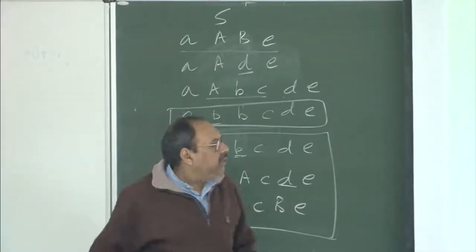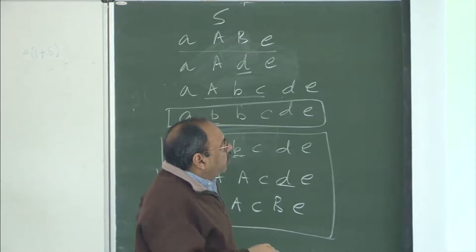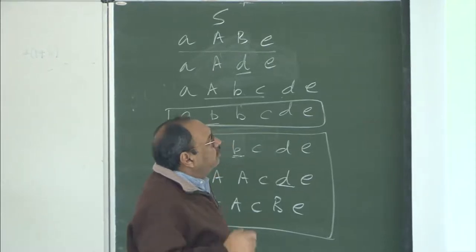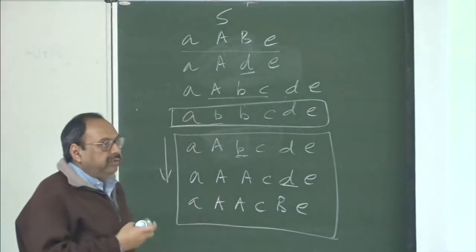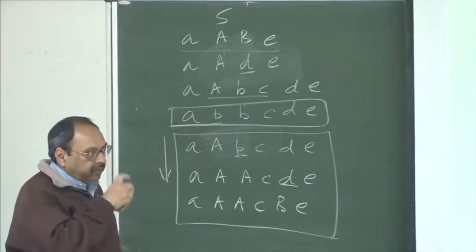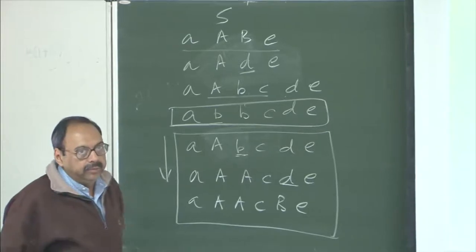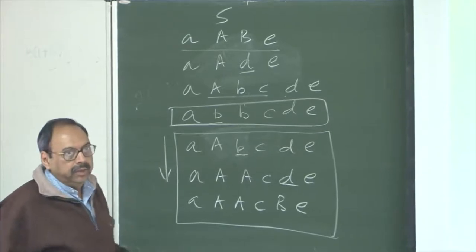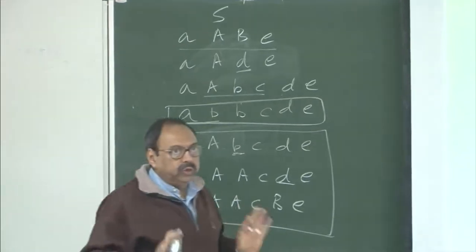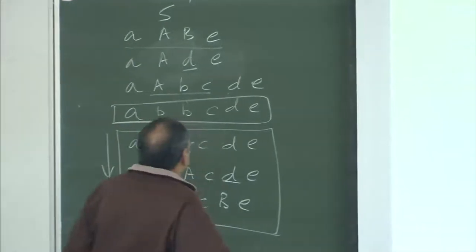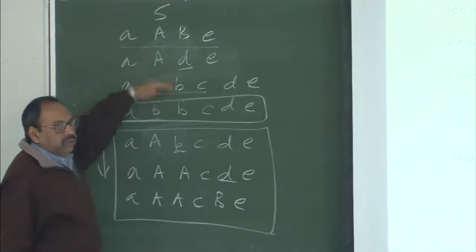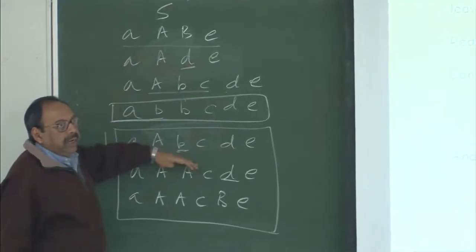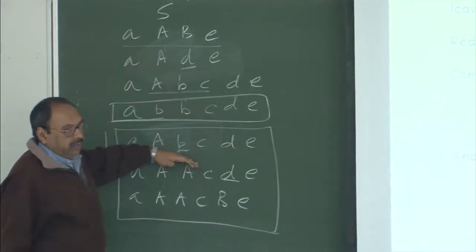This is what will be part of building the bottom-up parser — when we process this grammar, this information will be captured. It is clear that two different choices can lead to entirely different situations.